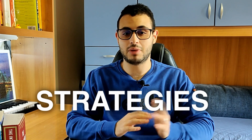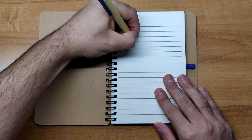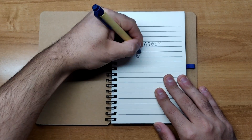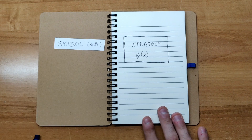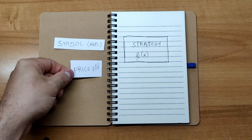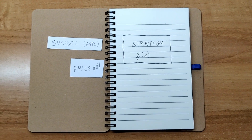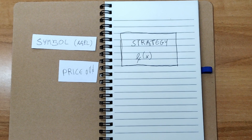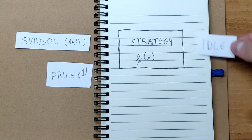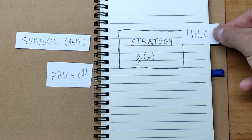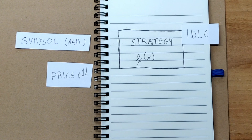Now that we have access to the broker, we need to define one or more strategies to buy and sell assets. Let's see a strategy like a mathematical function. This function takes as input the asset information, like the symbol and the price over the last X days. It performs internal calculations, and the output is an operation. We can have three types of operations: idle, which means do nothing, so we will not create orders.